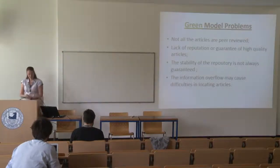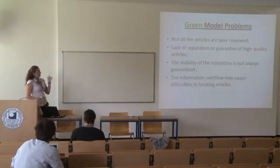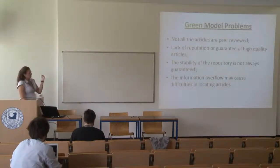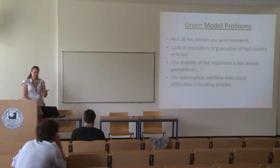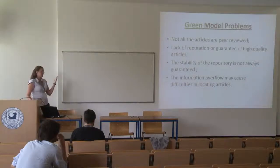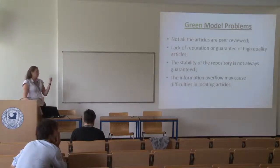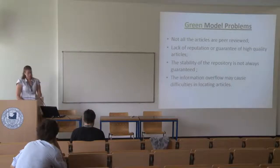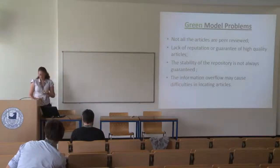As for the green model, it also has faults. Not all articles are peer reviewed, and there is a lack of reputation or guarantee of high quality. Another problem is the stability of the repository is not always guaranteed — sometimes websites disappear and repositories are just shut down. In the information overflow area, we can experience problems with locating an article on the internet, especially if it's not a thematic repository or not organized in some kind of order.